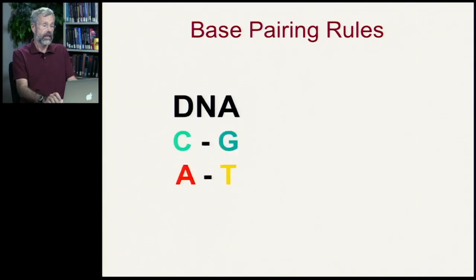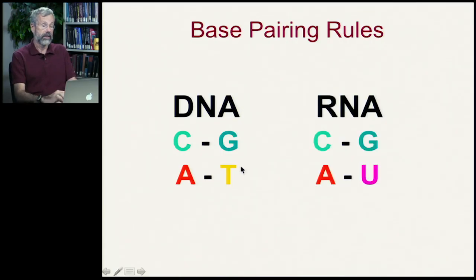Now the base pairing rules are very well defined in DNA. C can only pair with G, A with T. In RNA it's the same with C and G, but now it's A with U since there's no T and instead it's U.